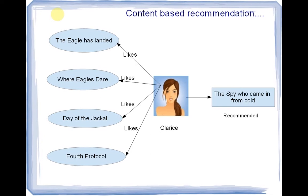Here is a content-based recommendation system. There is a reader, Clarice, who likes the novels shown on the left. If you have read some of these novels, you would have guessed they are all spy thrillers by different authors. So the system suggests her another spy thriller — 'The Spy Who Came in from the Cold.' This is an example of a content-based recommendation system.